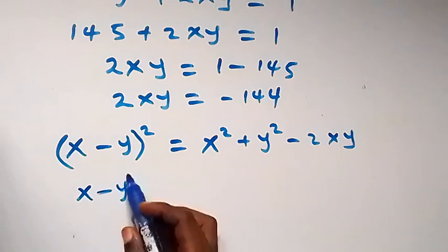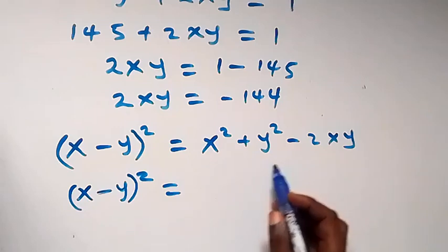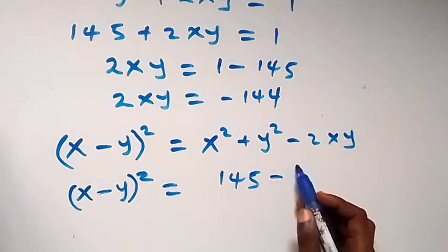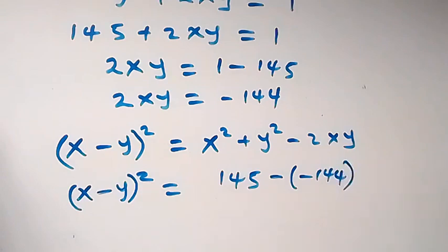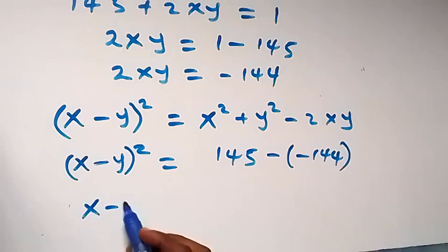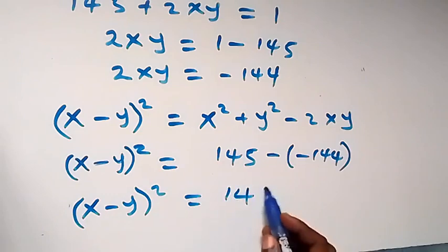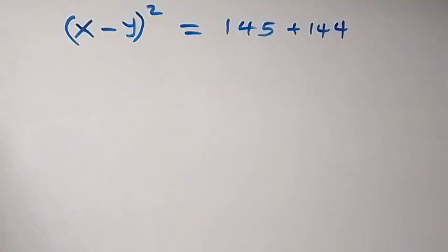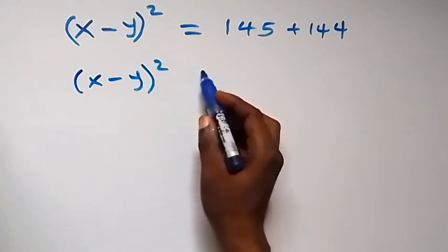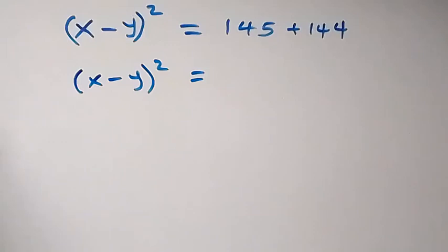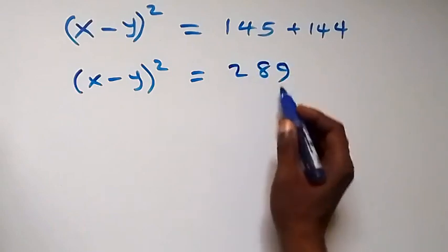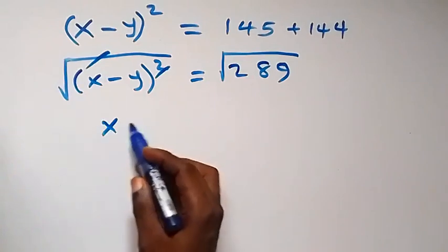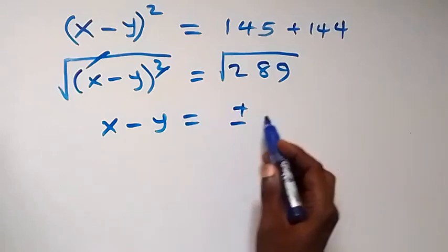Substituting: (x minus y) squared equals x squared plus y squared minus 2xy. From equation four, x squared plus y squared equals 145, and 2xy equals minus 144, so minus (minus 144) equals plus 144. Thus (x minus y) squared equals 145 plus 144 equals 289. Taking the square root of both sides gives x minus y equals plus or minus 17.